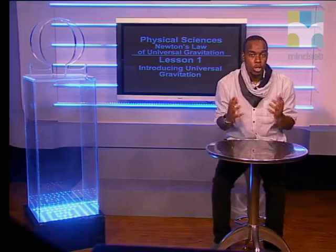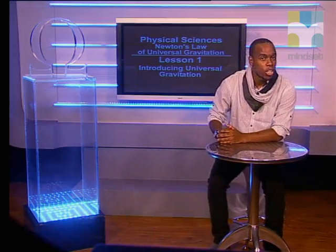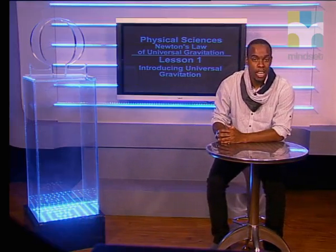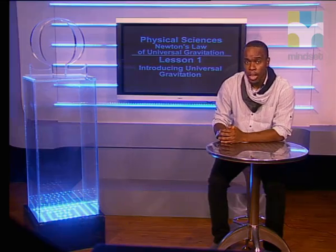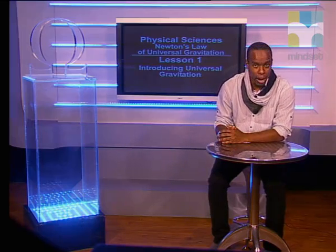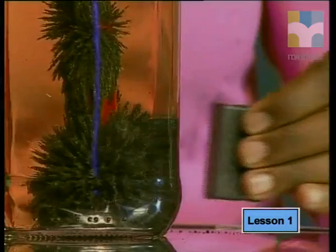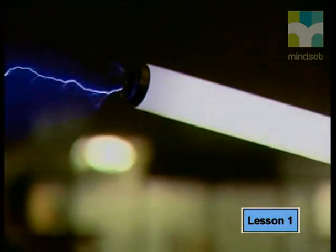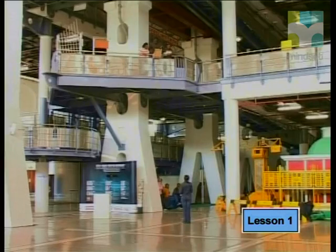Welcome to this lesson on introduction to forces that act at a distance in the series on Newton's law of universal gravitation. We start with a look at the effect of attraction due to magnetism and gravity. Magnets can attract iron and other ferromagnetic materials over a distance. Electrostatic forces also affect objects even though they aren't touching any charged object, and objects fall to the ground because of the Earth's gravitational field.